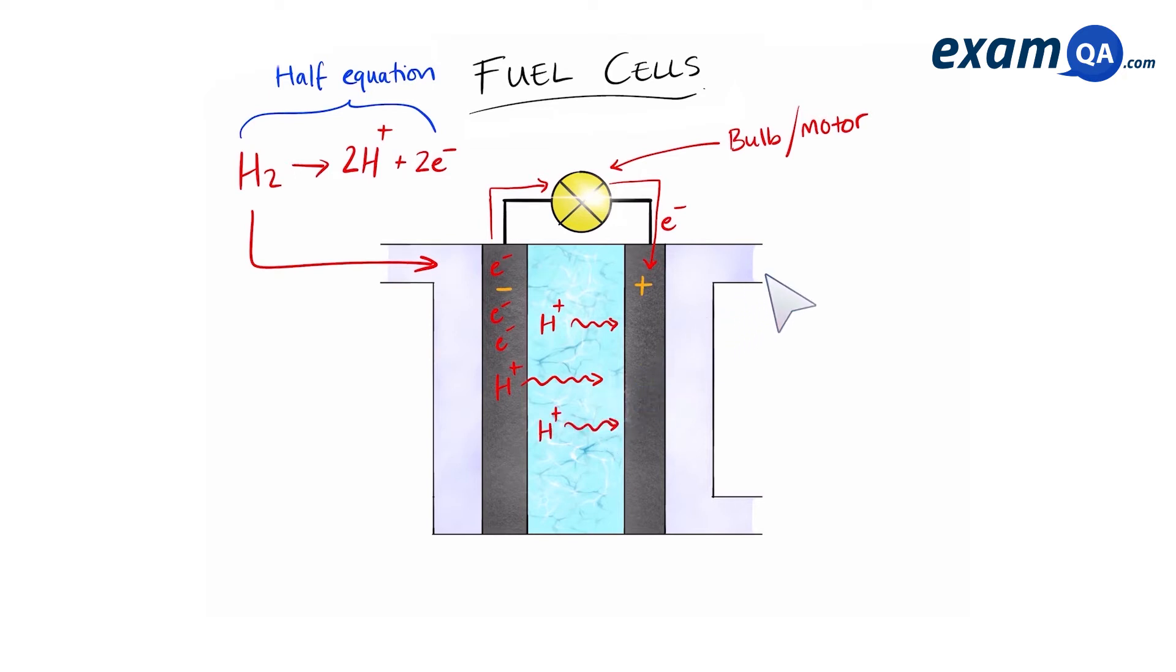At the positive electrode, oxygen enters and comes in contact with it. Upon contact, the oxygen molecules, electrons, and hydrogen ions come together in a reaction that forms water. Water is then released from the fuel cell as a product of this reaction. And this is the half equation that occurs at a positive electrode. The only thing left now is to finish off by balancing it. And that is the complete half equation.